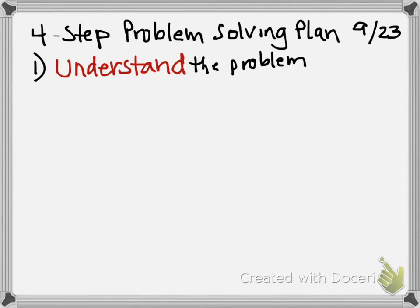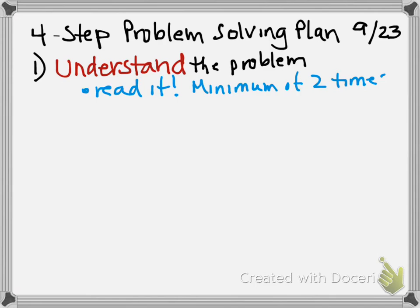Let's talk about what you would need to do to understand the problem. The first thing you need to do is read it — in fact, a minimum of two times. My first time I read through a problem, I just get the gist of what the problem is all about. The second time I read it, that's when I start picking apart what it told me. A couple of things you can do after you read it: you might identify the given information.